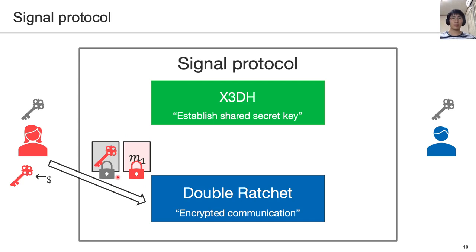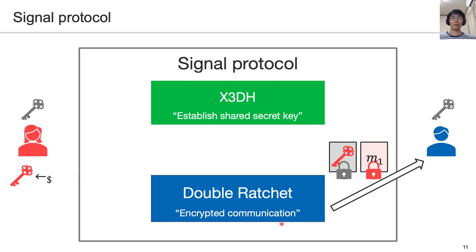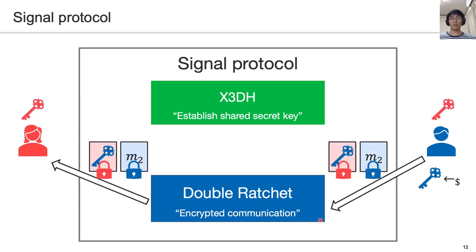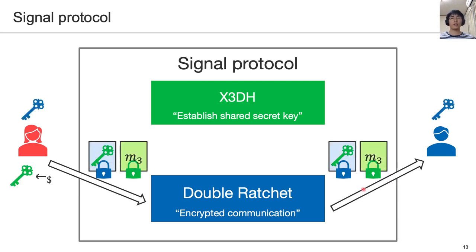She sends them to the server. When Bob becomes online, he receives the message from the server and decrypts it with the gray key. Then he obtains a new red key. When Bob sends a message to Alice, he chooses a new secret key and encrypts them. Thereafter, Alice follows the same procedures.